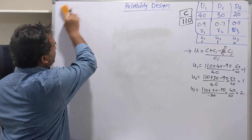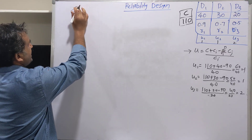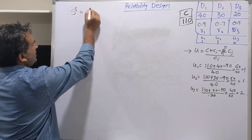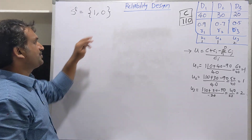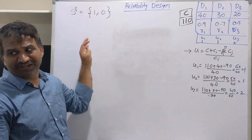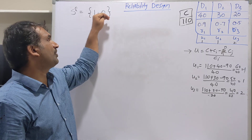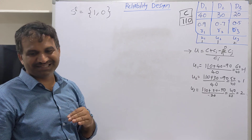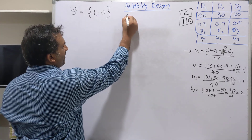Now let us start solving the problem. Initially, we consider S0, which is (1, 0) — meaning the initial reliability is 100% and the cost is 0. We take 1 because reliability is multiplied and cost is added; if we multiplied with 0, all answers would be 0.